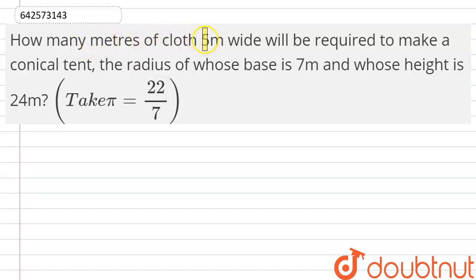how many meters of cloth 5 meter wide will be required to make a conical tent, the radius of whose base is 7 meter and height is 24 meters.